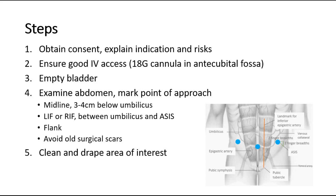Prior to the procedure, ask the patient to empty their bladder. Then we start by examining the abdomen and mark the point of approach. Usually mark one point at the midline, 3–4 cm below the umbilicus, and then one point in the left or right lower quadrant, between the umbilicus and the anterior superior iliac spine or the patient's flank. This depends on the location of the fluid as determined by percussion of the fluid wave.